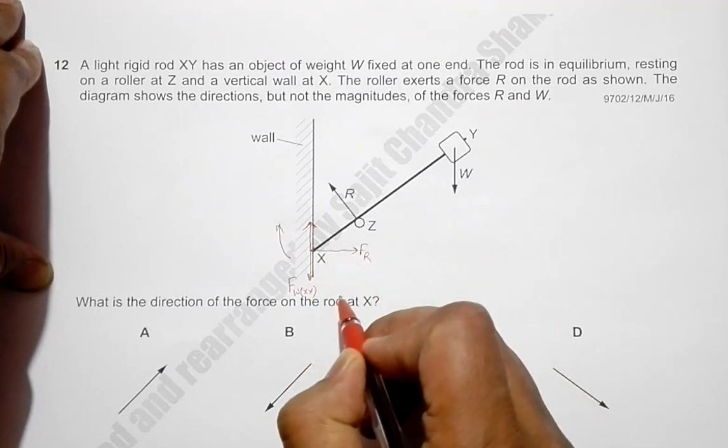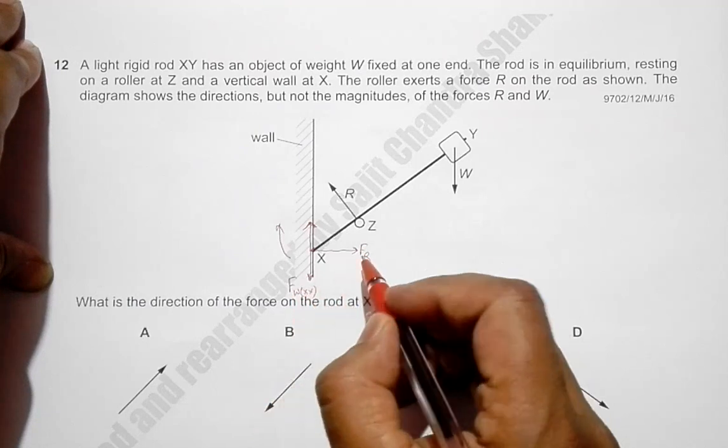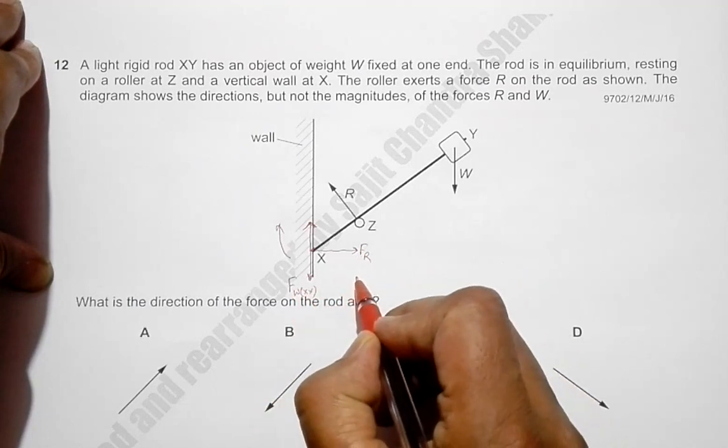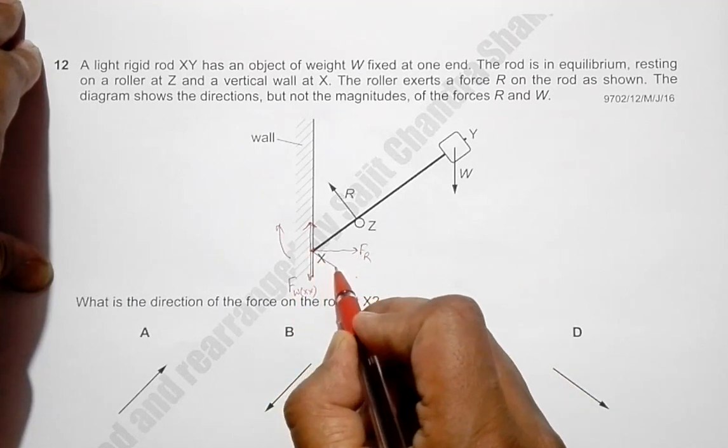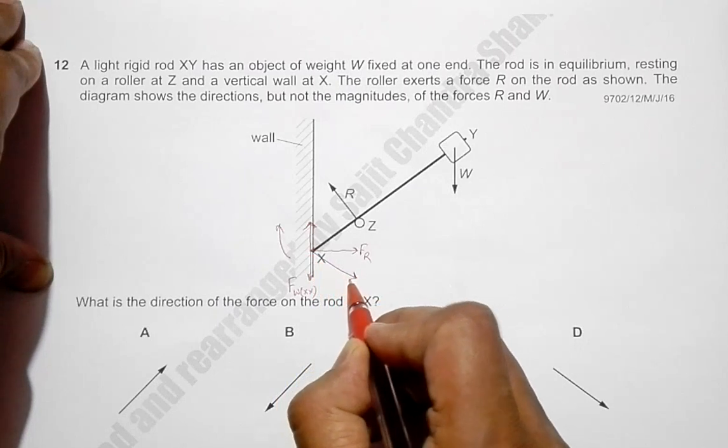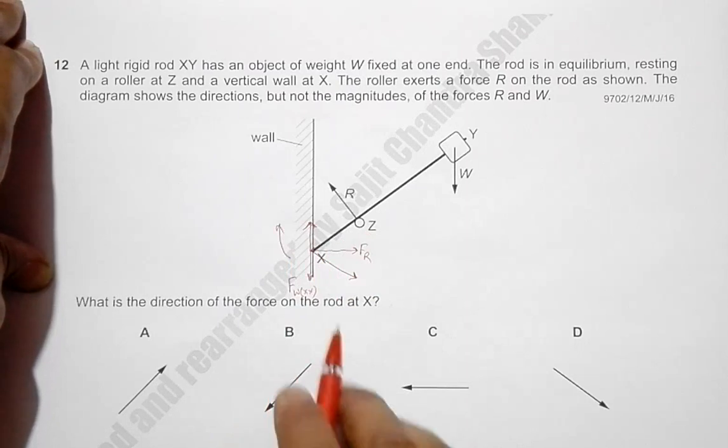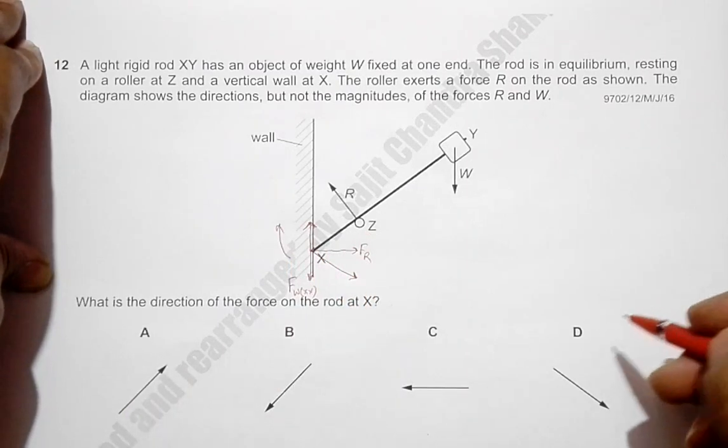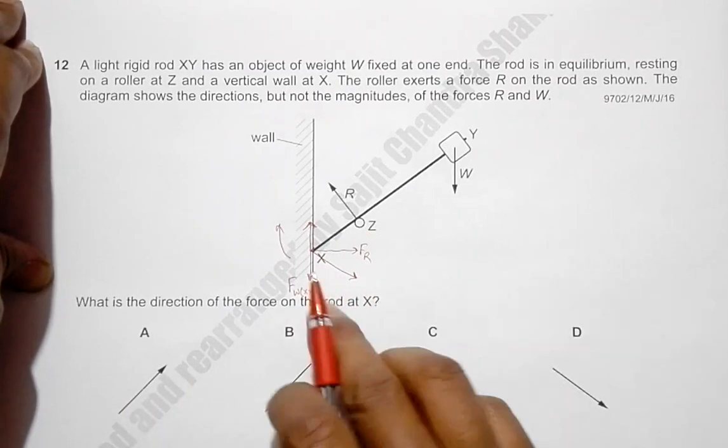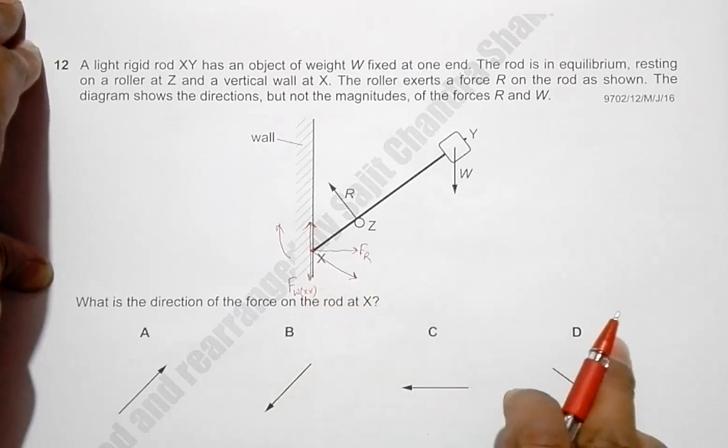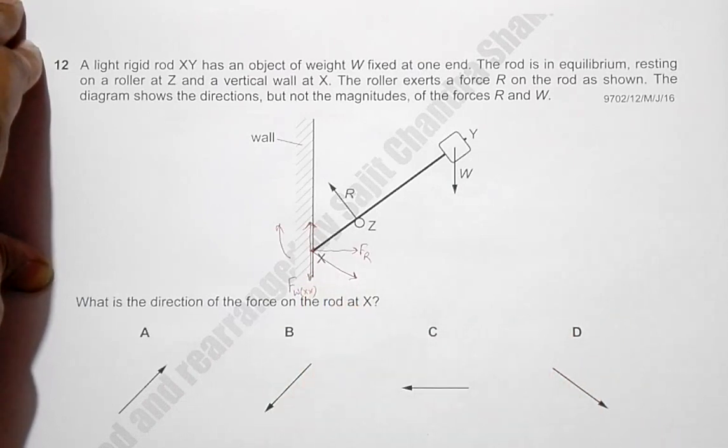Because of these two forces, there will be some sort of resultant here. So this is the total resultant force exerted by the wall on the rod at this point X. So that means as you go through the choices, choice number D represents this force. So choice number D is the correct answer.